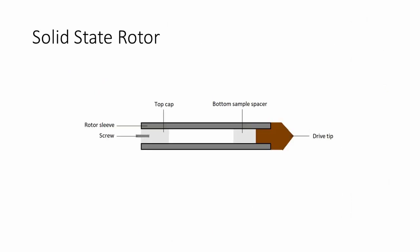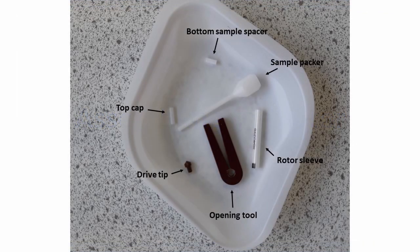In order to do MAS NMR, the sample needs to be rotated at high speed about the magic angle and, to do this, we need to load the sample into a special rotor. Today we will show you how to pack and unpack a solid state rotor using a solid sample. The 4mm rotor is made of zirconium oxide and can spin up to 18 kHz. The rotor sleeve is complemented by a drive tip, a bottom sample spacer, and a top cap. Other accessories include a sample packer and depth indicator, a top cap extractor tool, an opening tool, and a loading tool.